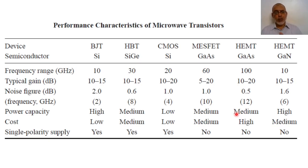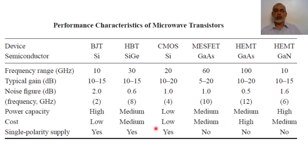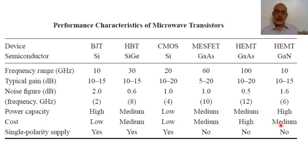From the point of view of cost: the bipolar junction transistor is the lowest price — it is a very cheap transistor. The gallium arsenide HEMT is the highest price, the most expensive transistor. In between, the heterojunction bipolar transistor and the MESFET are medium cost. Gallium nitride HEMT nowadays is high cost — not low or medium — because the fabrication and doping of gallium nitride is not simple.